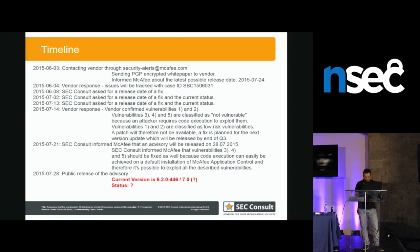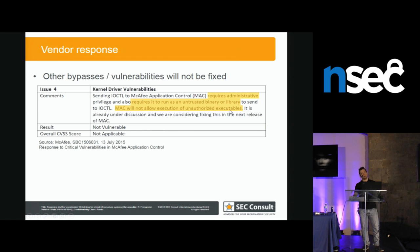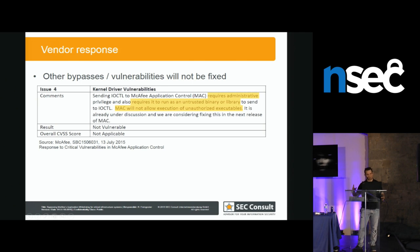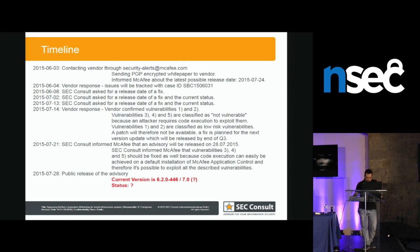Also interesting: 60 days later we released our advisory — they hadn't fixed anything. About three months later someone from Zero Day Initiative came across our advisory, found the same kernel-land vulnerabilities, and reported them again. The current version available on the website is still the same. If you have credentials and can log in there may be version 7.0, so maybe it's fixed there. But the publicly downloadable version still has all the issues, and they don't reply to me anymore.